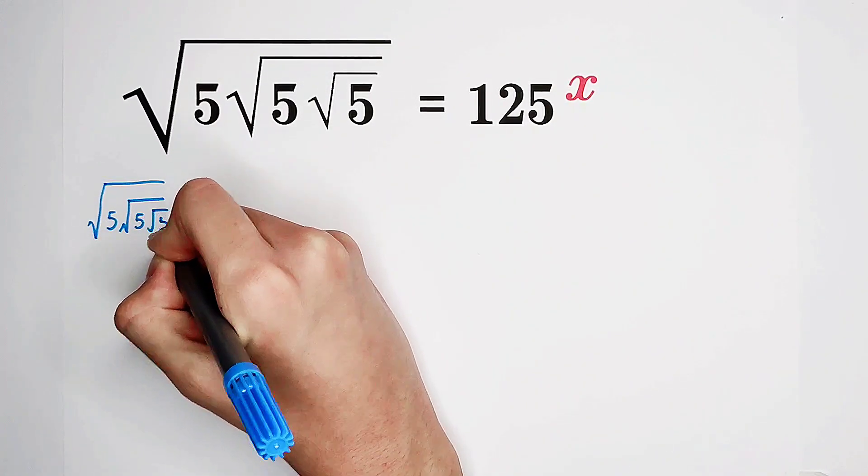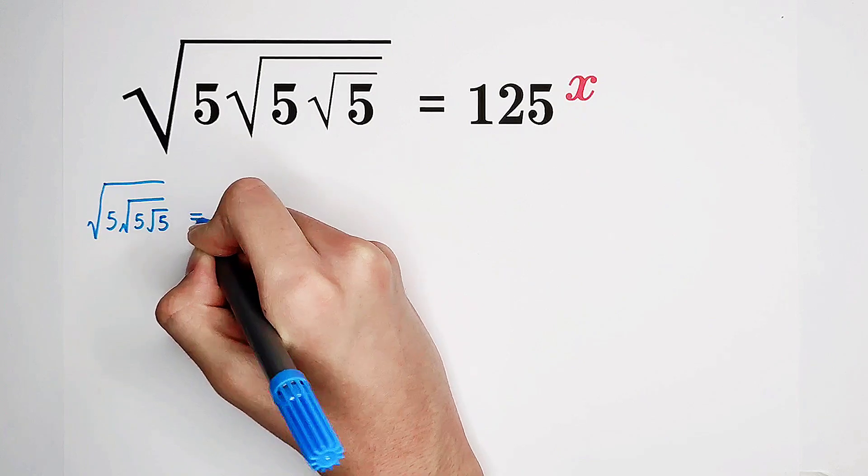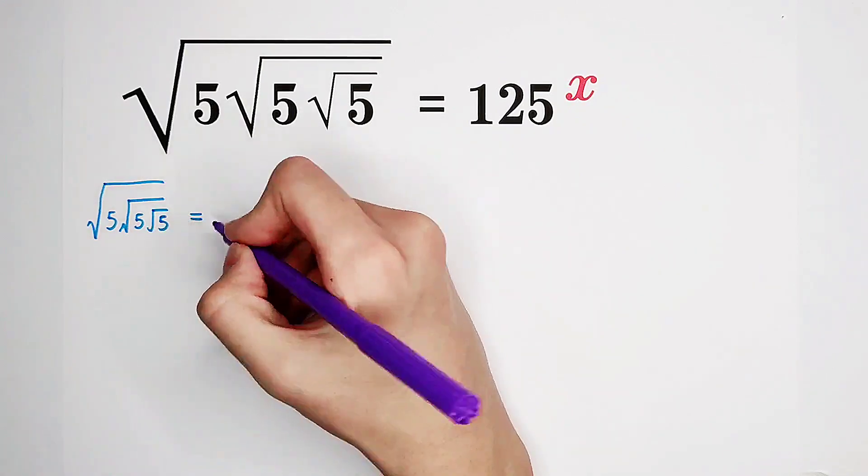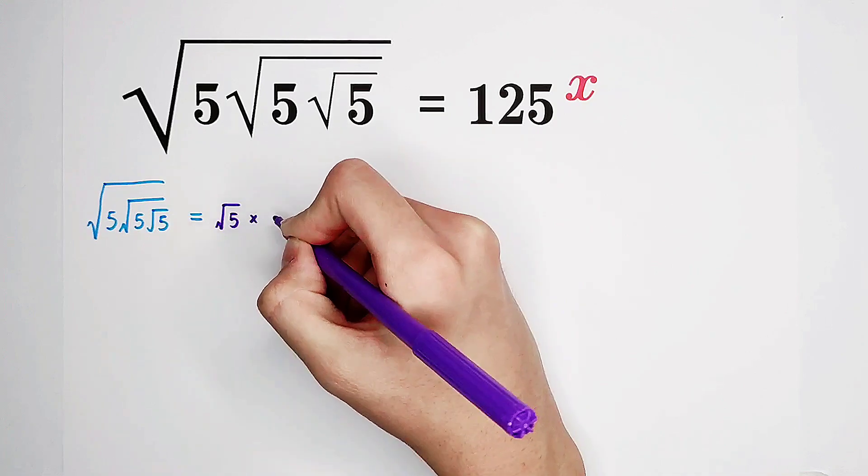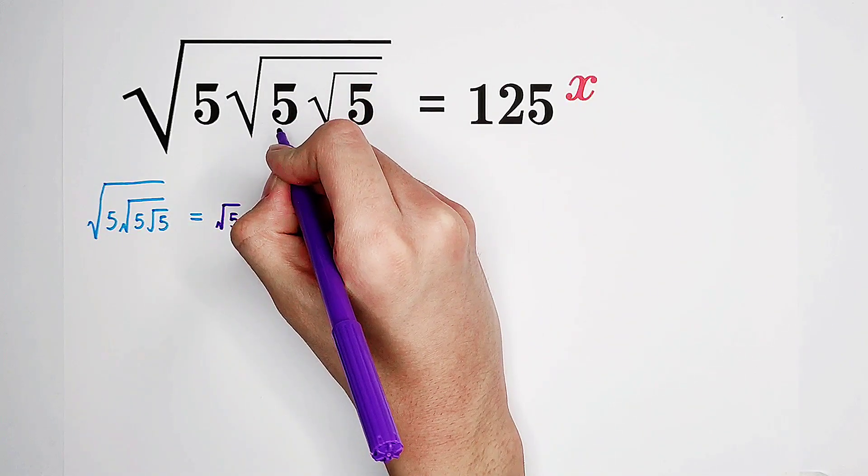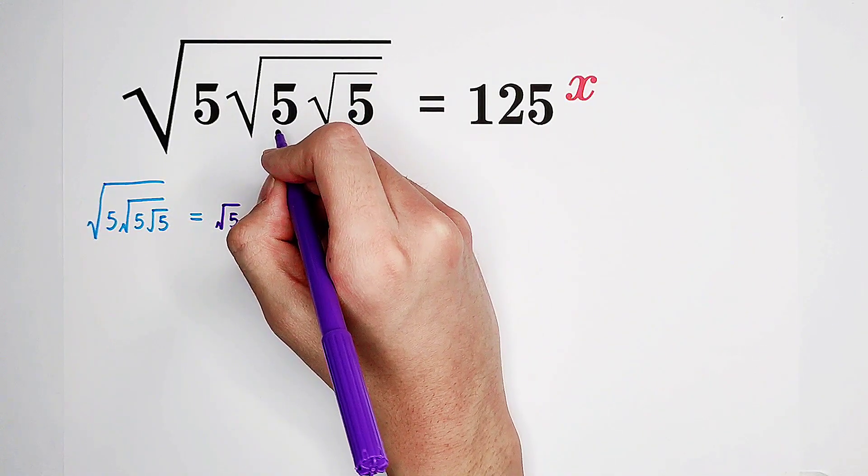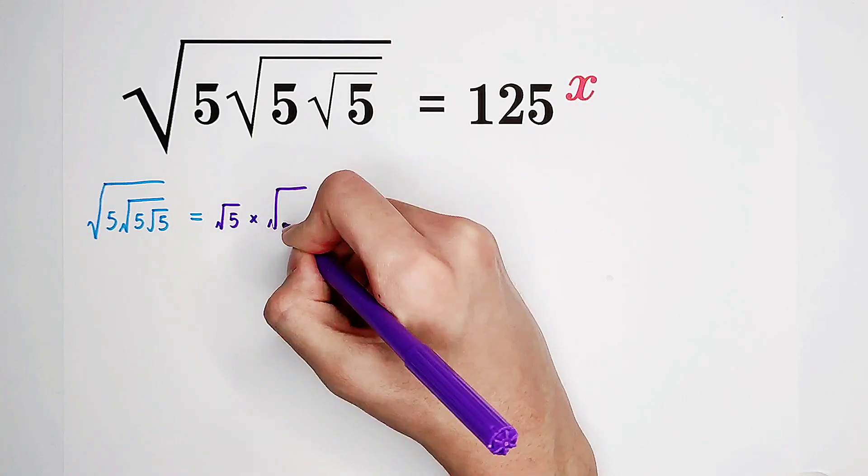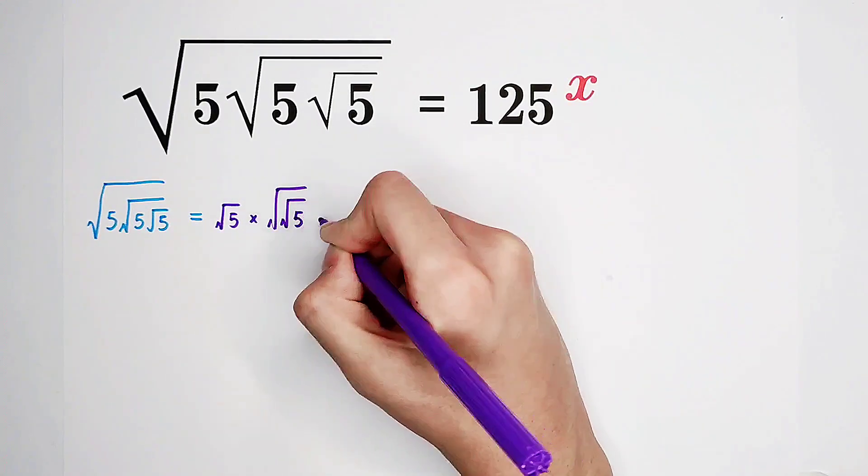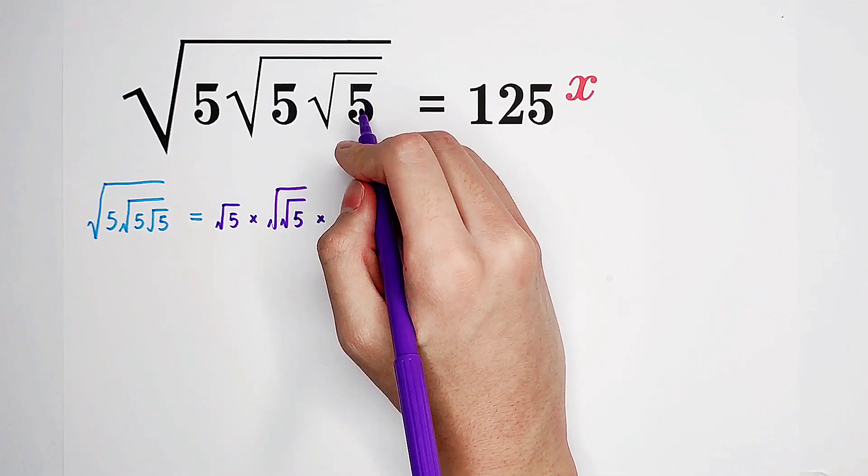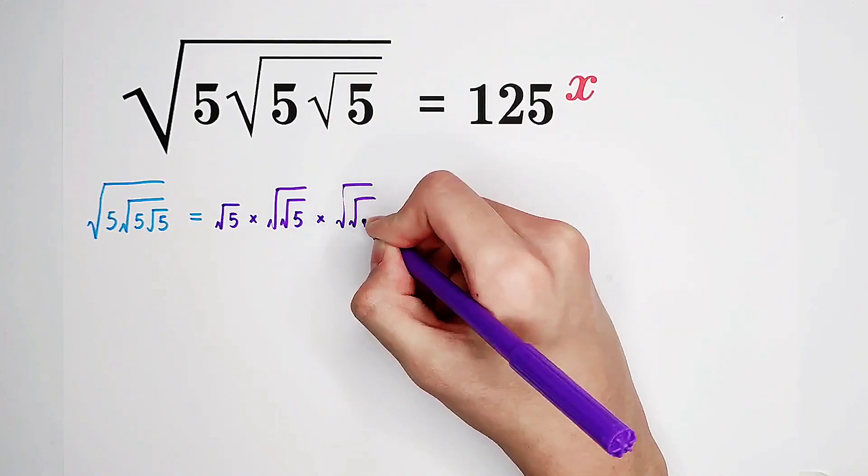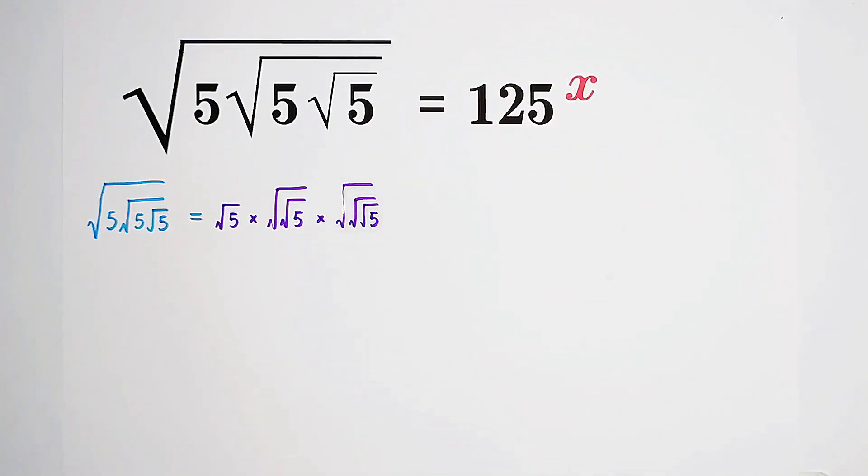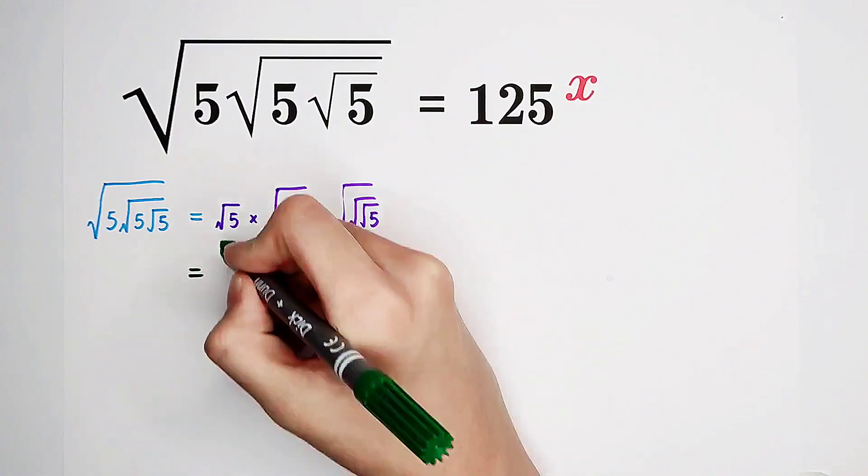Our left-hand side: square root of 5 times square root of 5 times square root of 5 can be written as square root of 5 first, then times this 5 that has 2 square roots over it, so times square root of square root of 5. This 5 has 3 square roots, so square root of square root of square root of 5. That's it.